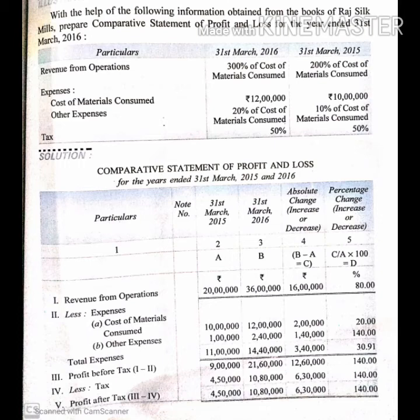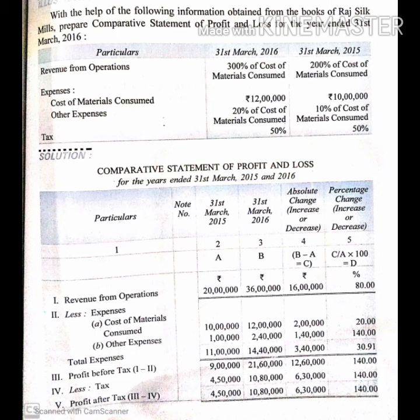Profit after tax for 2015: 9 lakhs minus 4 lakhs 50,000 equals Rs. 4 lakhs 50,000. For 2016: 21 lakhs 60,000 minus 10 lakhs 80,000 equals Rs. 10 lakhs 80,000. Absolute change is 10 lakhs 80,000 minus 4 lakhs 50,000 equals Rs. 6 lakhs 30,000. Percentage change is also calculated using the same formula, giving 140%.